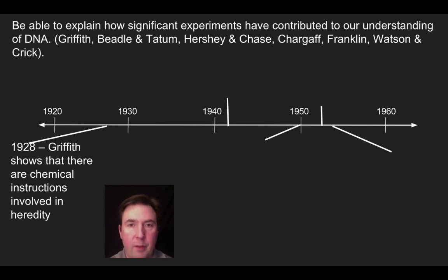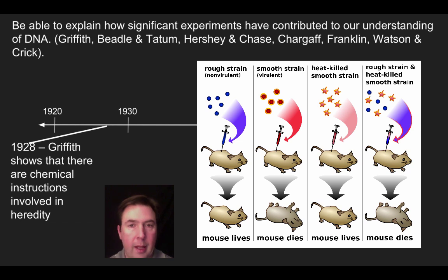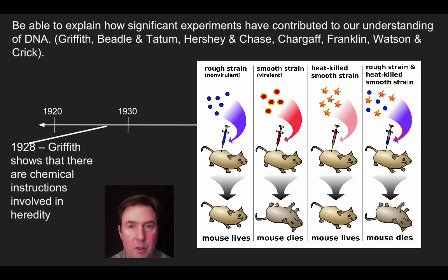Griffith used two strains of bacteria: a rough strain and a smooth strain. The rough strain was perfectly normal — you could inject it into a mouse and the mouse would be fine. The smooth strain was virulent and would kill the mouse. If you heated up the smooth strain and injected that into the mouse, nothing bad would happen. But if you took that heated-up smooth strain and mixed it with the normally non-harmful rough strain, the rough strain would somehow pick up the property that made it deadly — producing a virulent strain for mice.